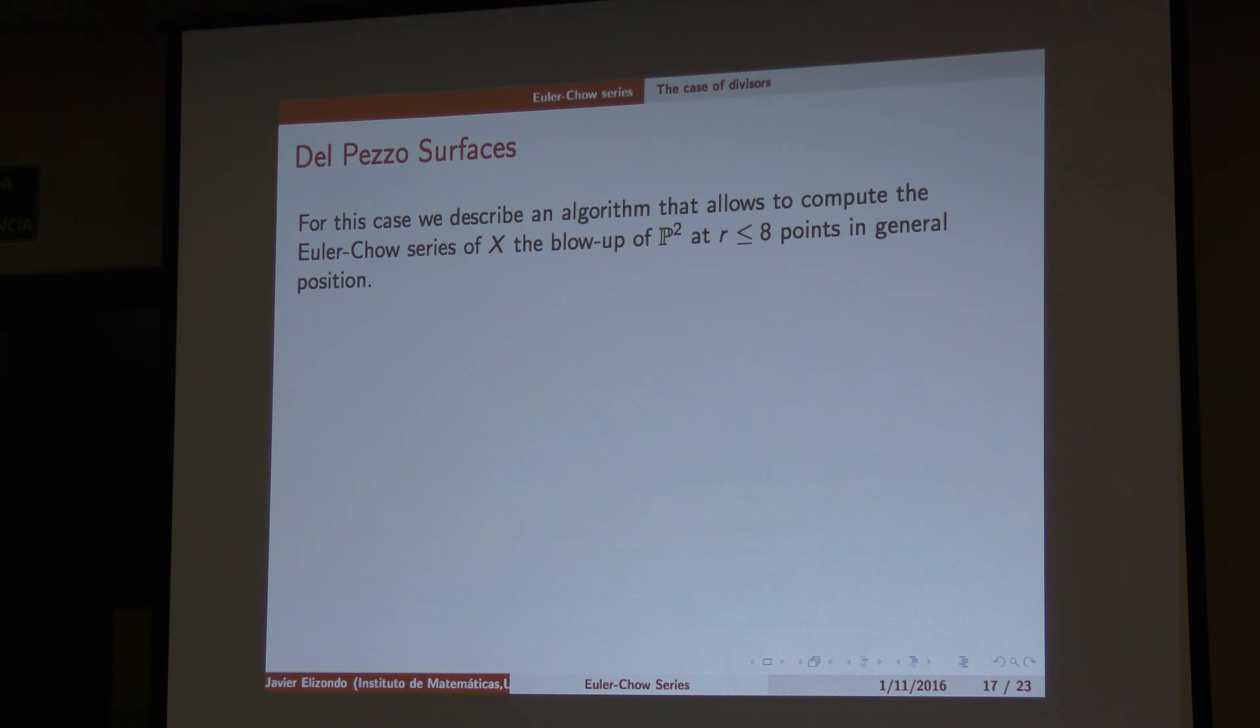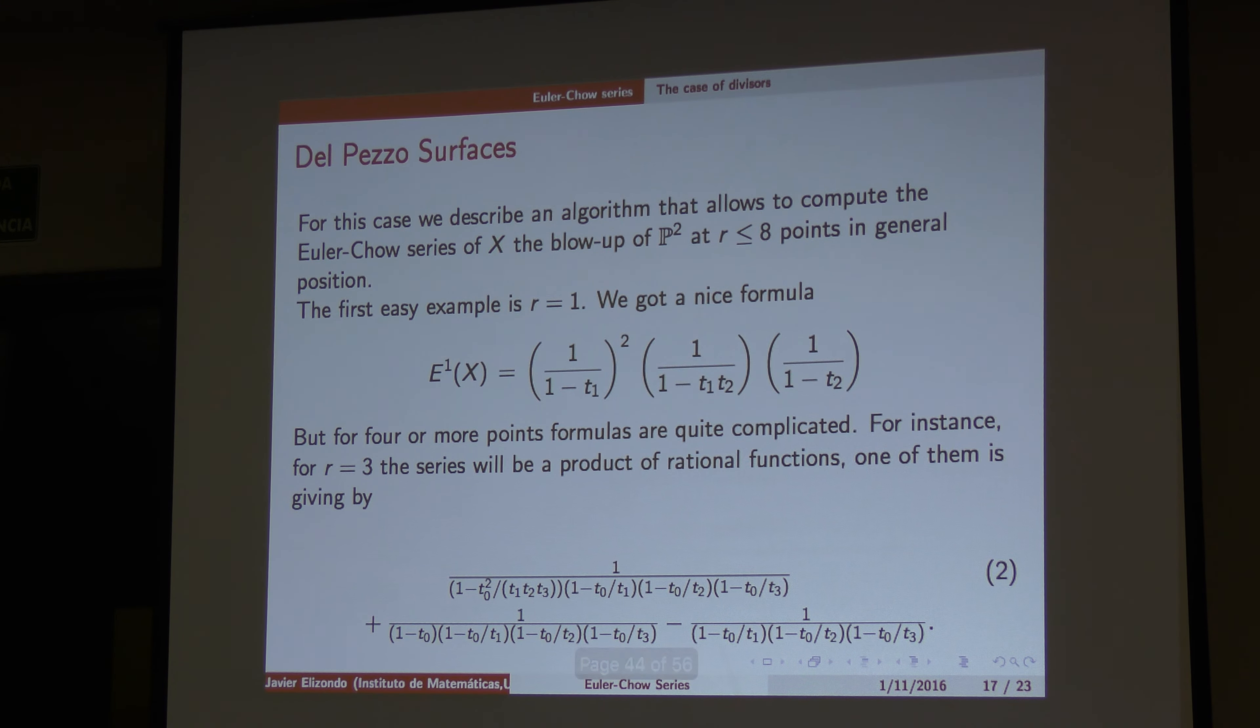Okay. So now we see the del Pezzo surfaces. For the del Pezzo surfaces, we elaborate algorithms to compute the rational Euler characteristic series. They are rational in all those cases. The first case is very simple, we have this one. For r equal 3, you know, in general position, you have P2 blow-up of frequency. We have something like this. One of the... It's a product of rational functions. One of the rational functions is this. So as you can see, it gets very complicated.